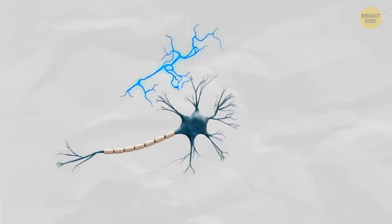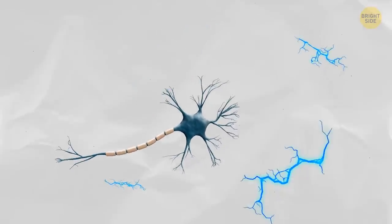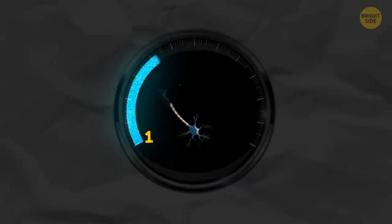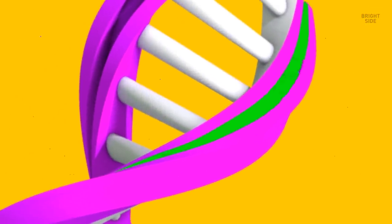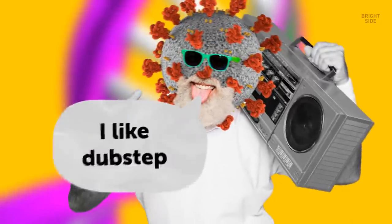Nerve cells transmit 1,000 nerve impulses a second. They travel between 1 and 268 miles per hour. Our DNA contains 100,000 viruses. Scientists have discovered one that goes back 100 million years.